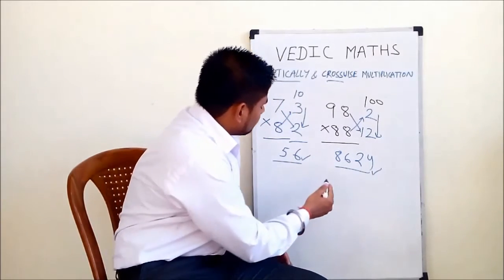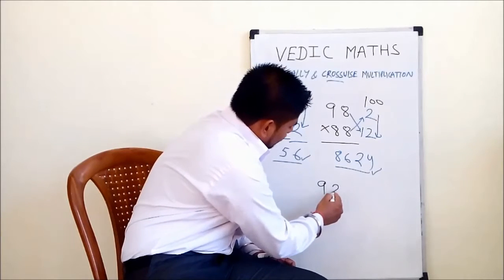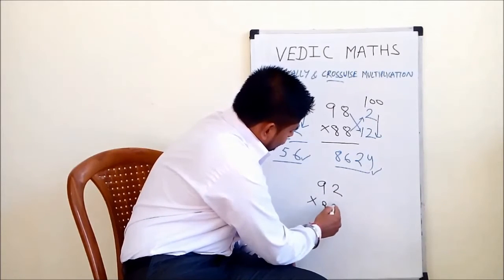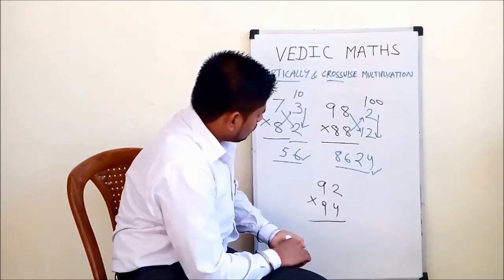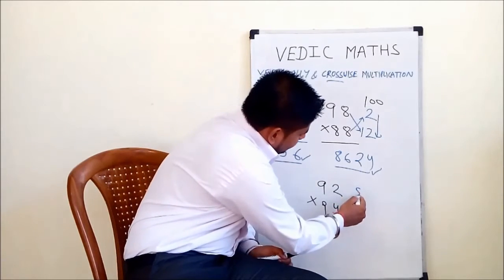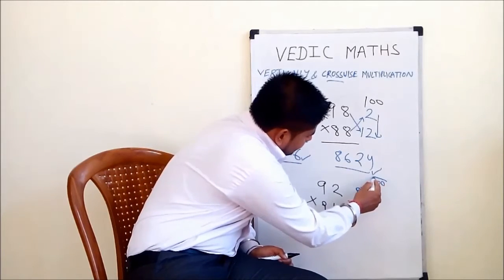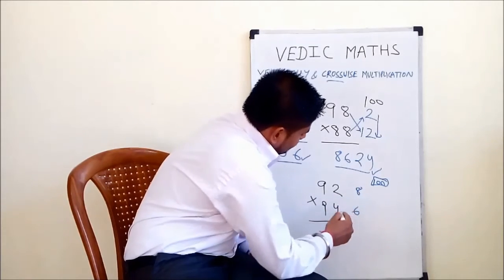We take another example. For example, 92 into 94. 92 plus 8 is 100 as we take base as 100, and 94 plus 6 is 100.